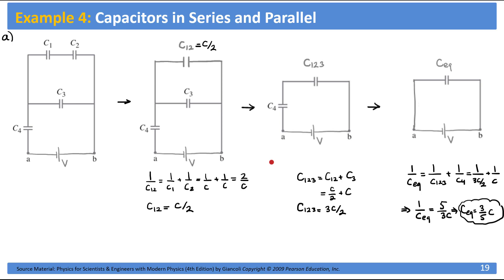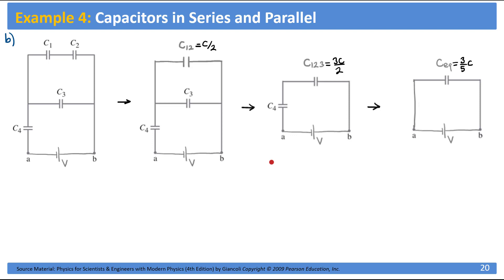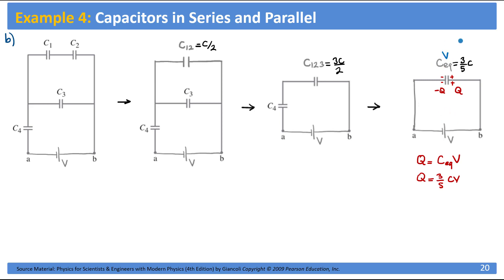Now let's follow our steps backward and find the voltage and charge on each capacitor. If our battery has a positive terminal on one side and a negative terminal on the other, then one side of the equivalent capacitor will be positively charged and the other negatively charged. Let's call the charge Q. Using the capacitor equation Q equals C times V, where C is our equivalent capacitance, Q equals (3/5)C times V. The voltage on this capacitor is basically the voltage of the battery, V.